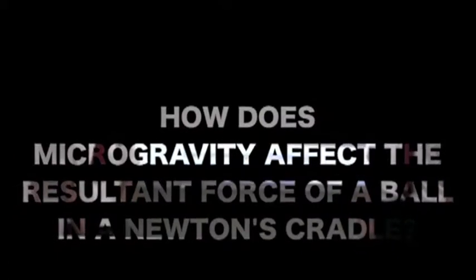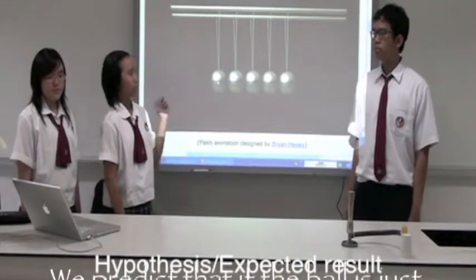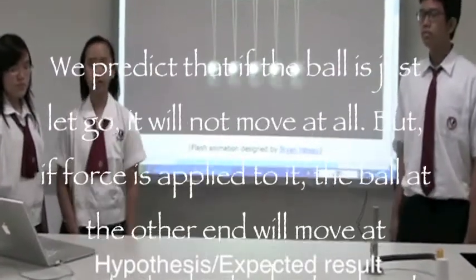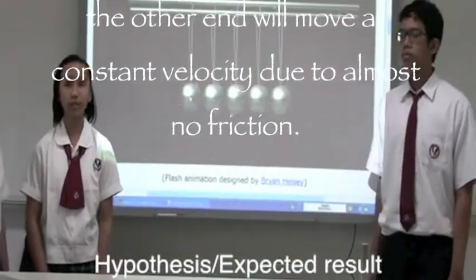So, our question is, how does microgravity affect the transfer of force of a ball in a Newton's cradle? We predict that if a ball is held and then just let go, the ball will not move at all. When a force is applied to it, the ball at the other end will move at constant velocity due to almost no friction.